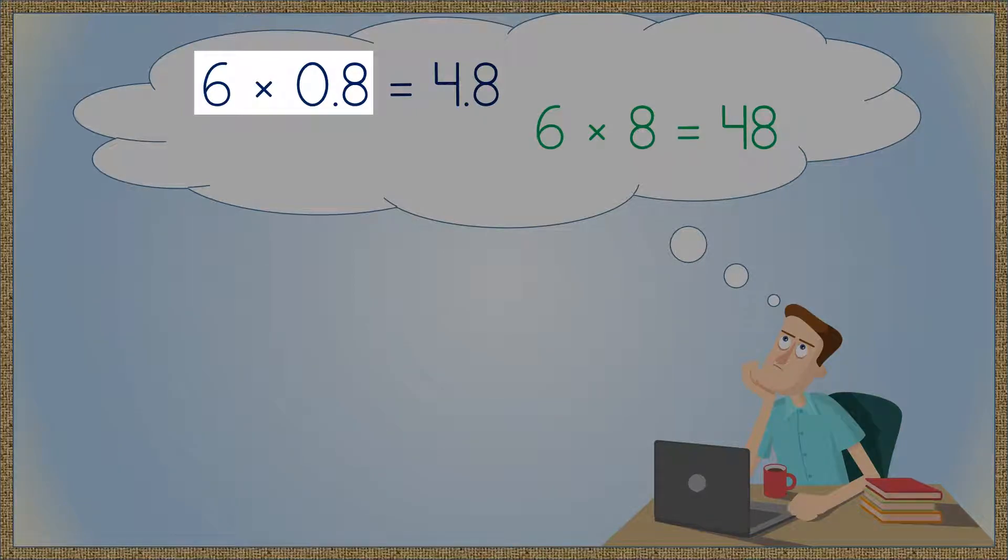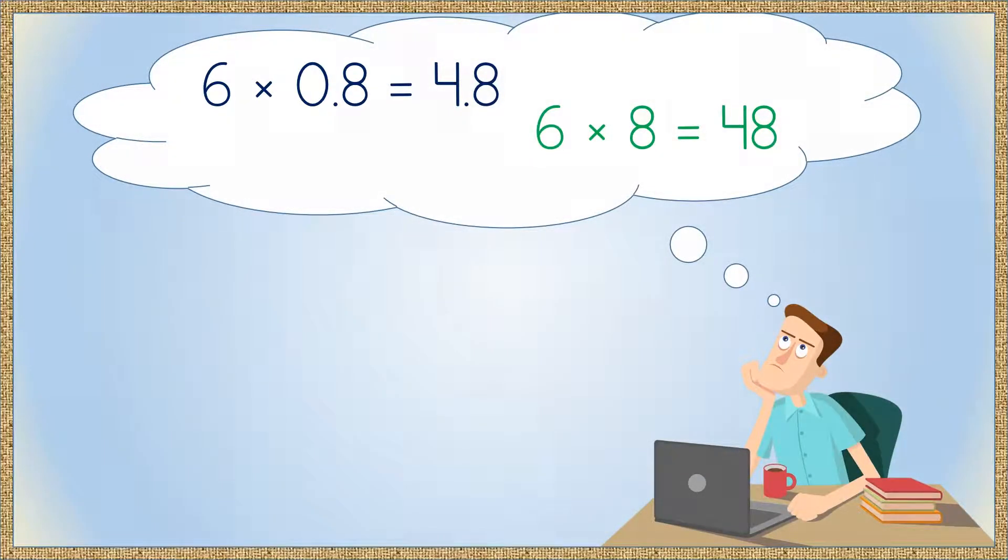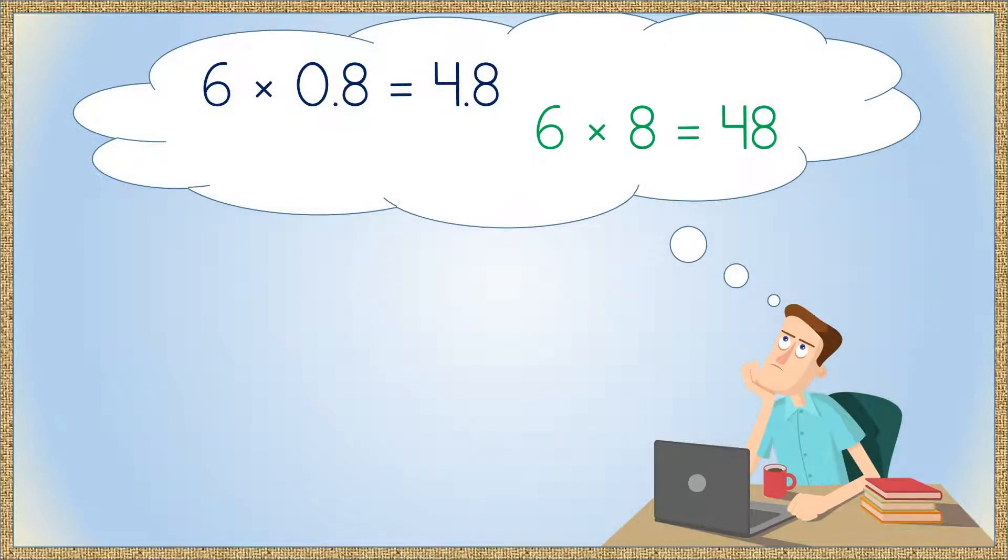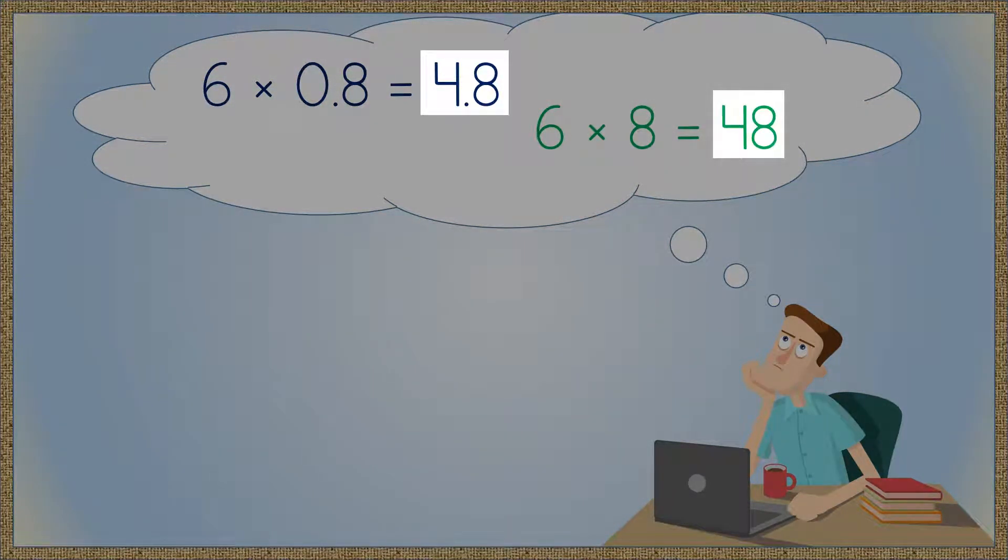Notice that the digits of 6 times 8 tenths are the same as the digits of 6 times 8. The digits of their products are also the same. The decimal points are really the only difference.